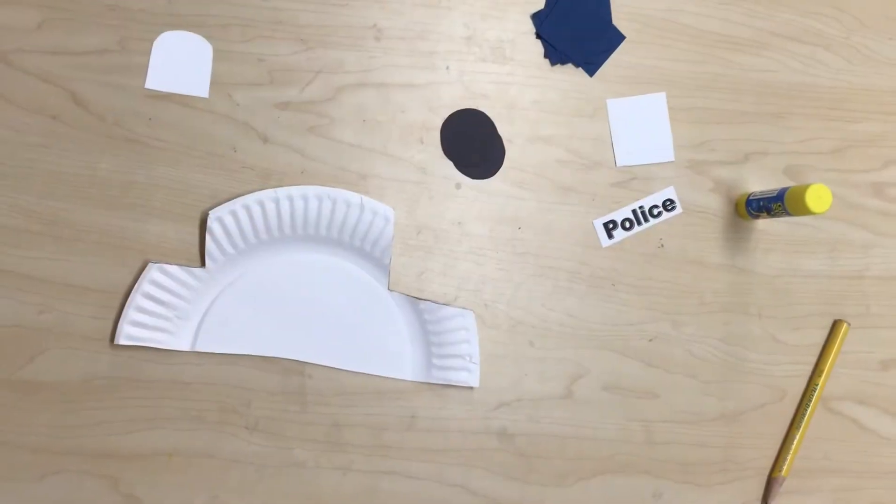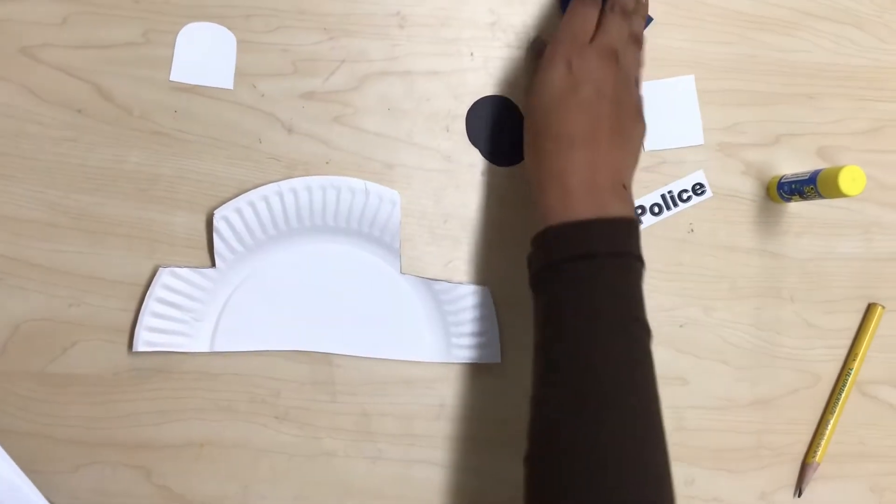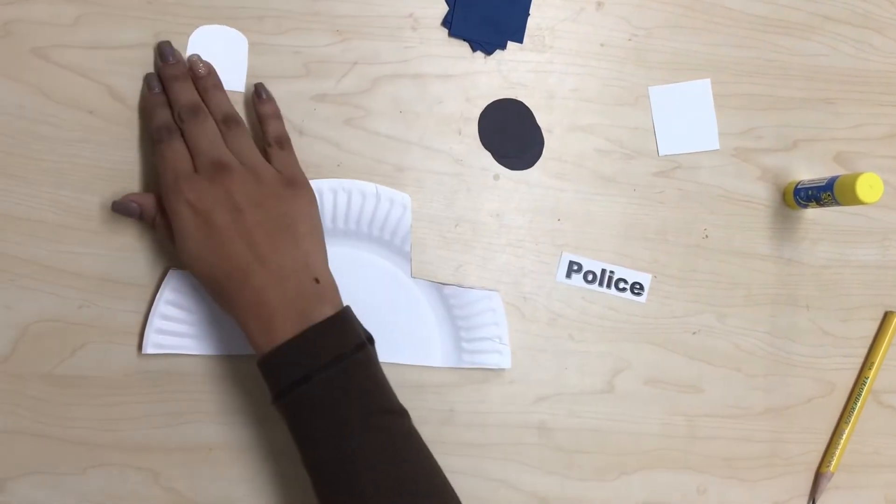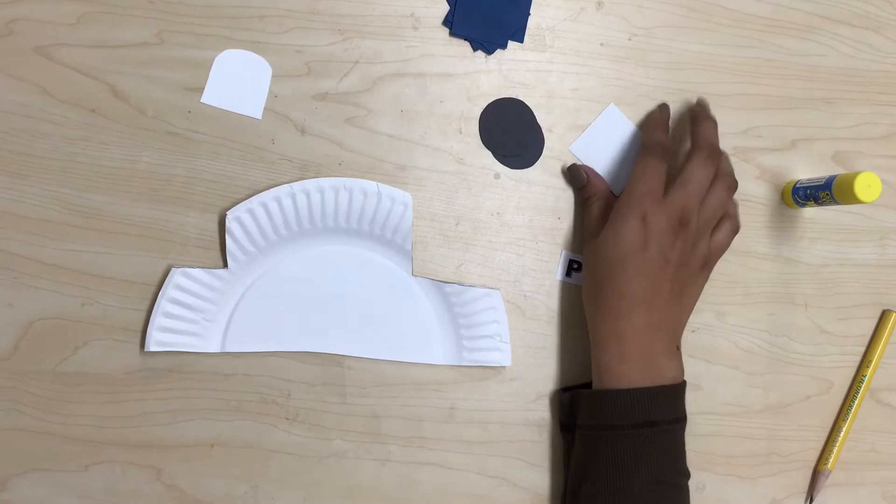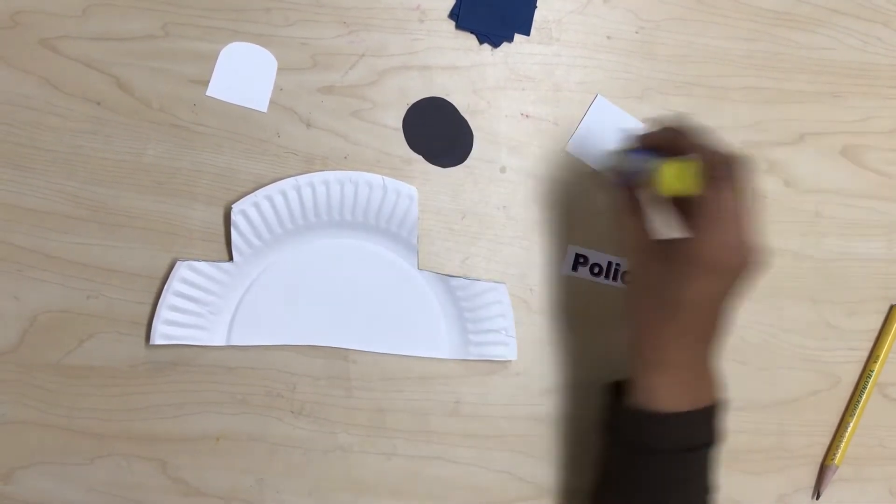Hi, my name is Mariana and the art activity for today is called police car paper plate. The materials that we're gonna use for this activity are a paper plate, glue, tissue paper, a police sign, a light bar, one white square, and two black circles.